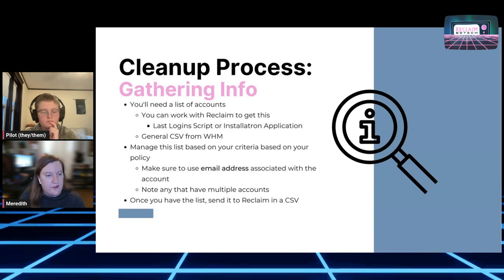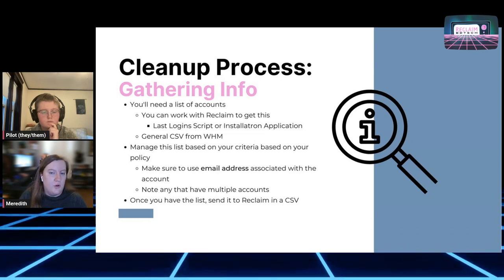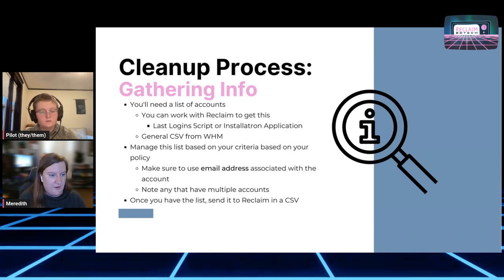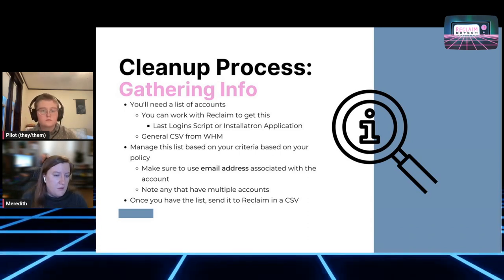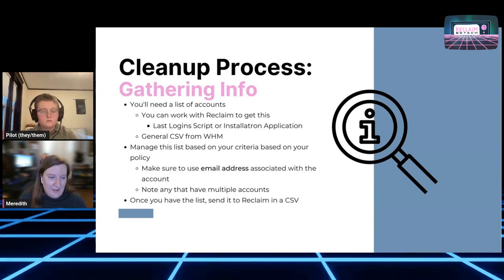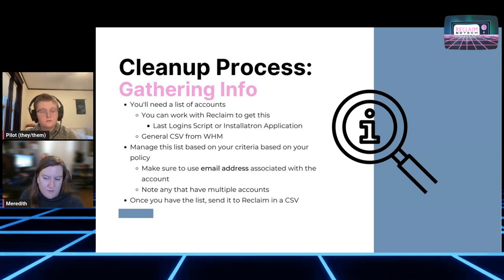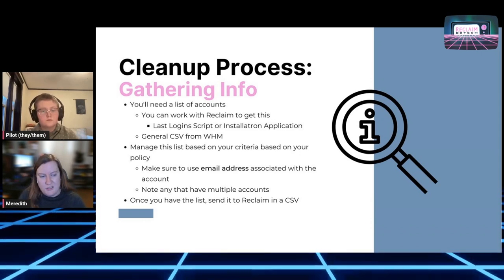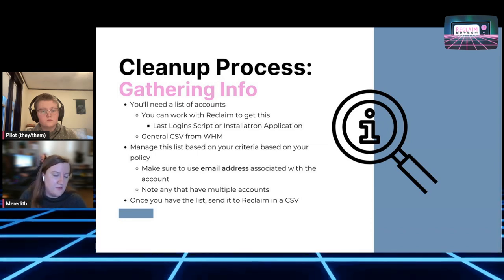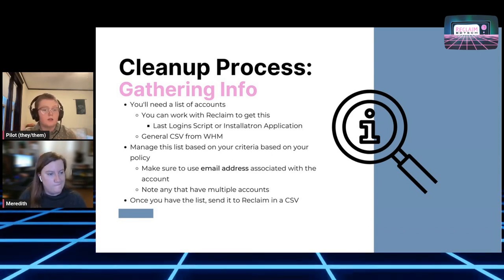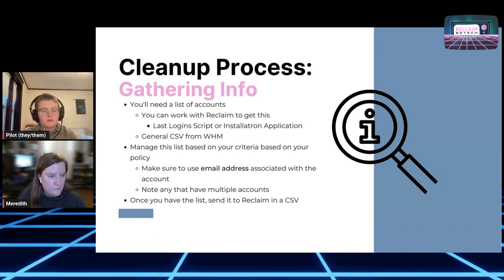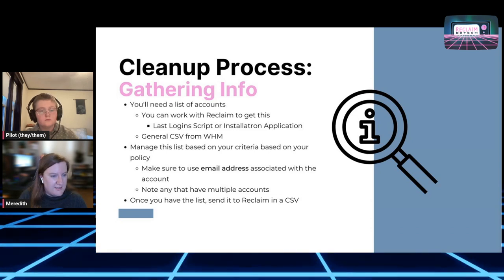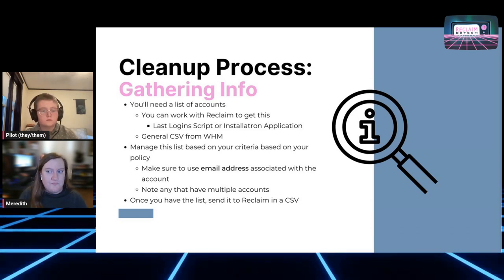Once you have your list, we have recommendations for paring it down based on what you want to remove. We have an automated script that works from a CSV file, and you want to make sure to save it as a CSV using the email address associated with the account. Make sure to note if an email address has multiple accounts associated with it, because our script does not differentiate between multiple accounts — it wipes based on the email address. So if a student is leaving and their email is going away, that's important to flag — for example, a long-running research project or a student club account that you want to maintain so they don't have to rebuild the site when the semester starts again.